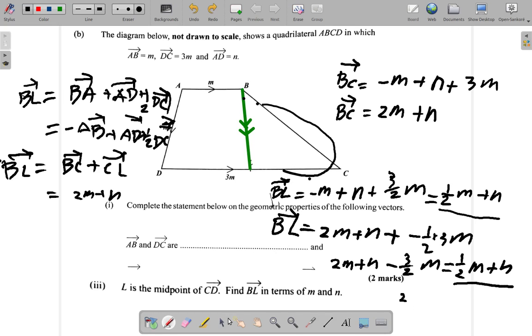So BL in terms of M and N using both methods is half M plus N.